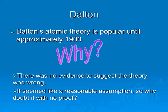Dalton's theory lasted that long for a couple of reasons. First, there was no evidence to suggest the theory was wrong. In science, we use the best information we have at the time, and when evidence changes, we incorporate that into the theory — no new evidence, no adjustments. The other reason was that it seemed reasonable: you could break things into smaller pieces and then go no farther. Why would anyone doubt it if it made sense with what we see when we interact with matter?